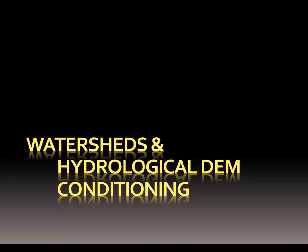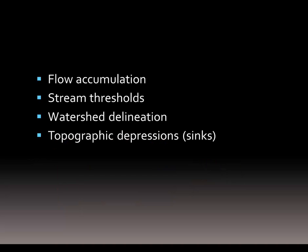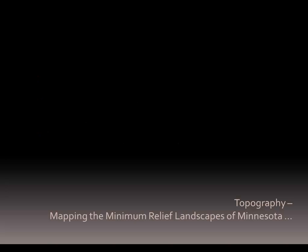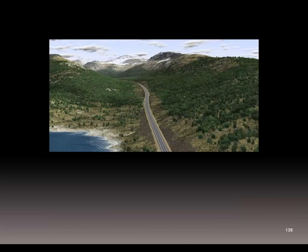Now we need to move towards the watershed and our hydrological conditioning. There are some additional calculations we need to do from the DEM to delineate the watersheds — specifically flow accumulation and establishing our stream thresholds — so that we can calculate the watershed delineation. We'll also have to understand where the depressions, sinks, or dead ends are and decide how we fill those, if at all.